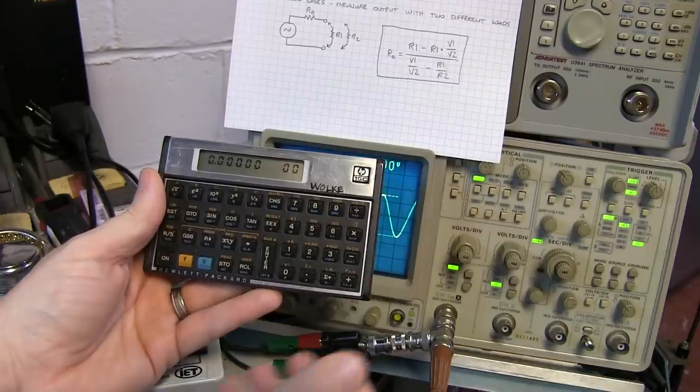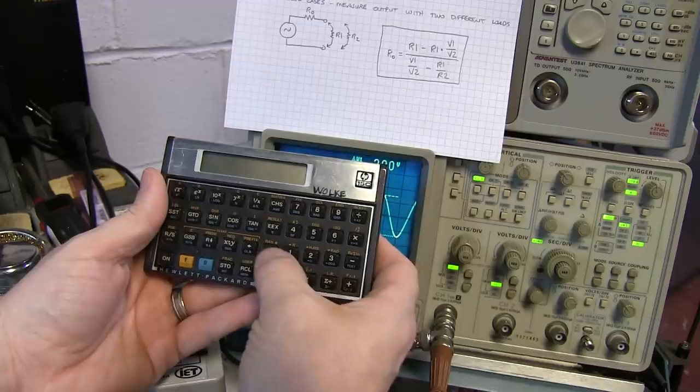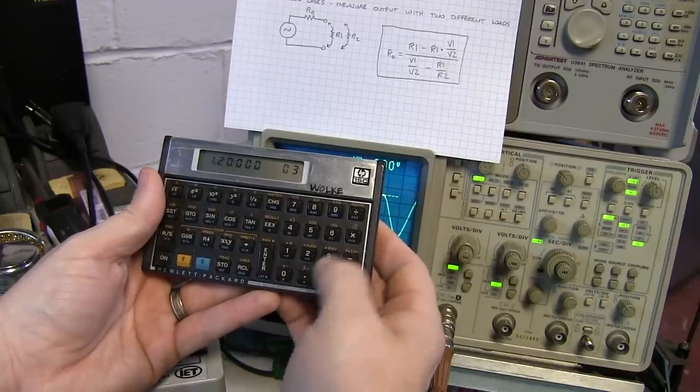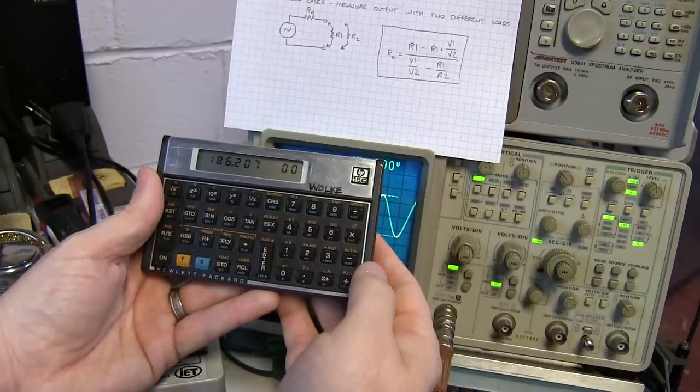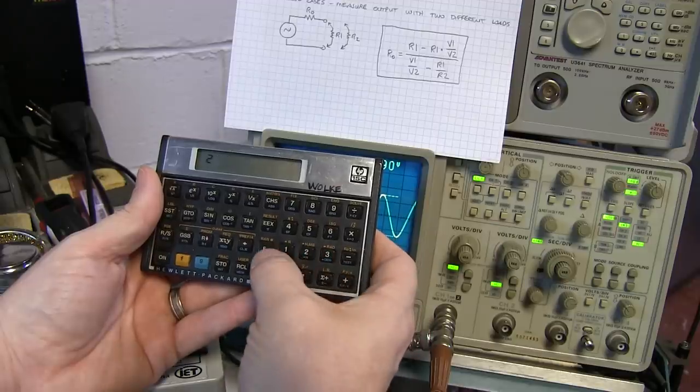Okay we'll calculate with those values. So R1 was 600 ohms, I'll enter that in here again and multiply by 2 volts, divide by 2.9 and subtract that from the original 600. And I'm also then going to take 2 volts divide by 2 volts divided by 2.9.